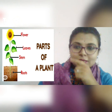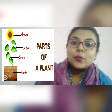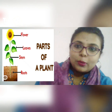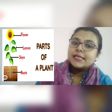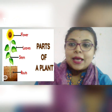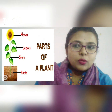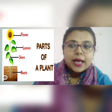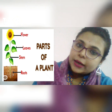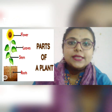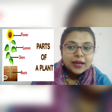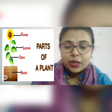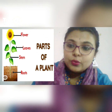Please look into this picture — this is a picture of a sunflower plant showing the parts of a plant. The parts of a plant are flower, leaves, stem, roots, fruits, and branches. The plant is divided into two parts: one above the soil and another below the soil. The plant part above the soil is known as the shoot system, and the part below the soil is known as the root system.